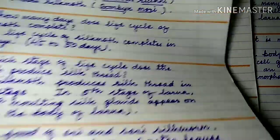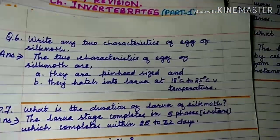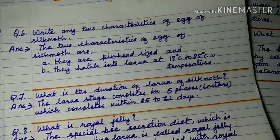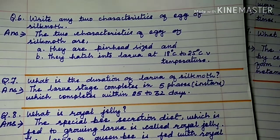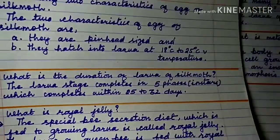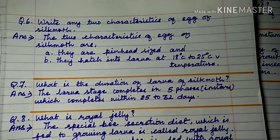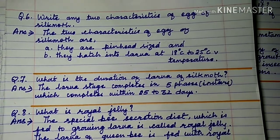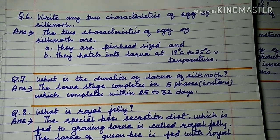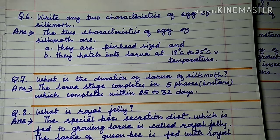Question number 6: Write any two characteristics of the egg of silk moth. The two characteristics are: they are pinhead-sized, that is very small, and they hatch into larvae at a temperature of 18°C to 25°C.